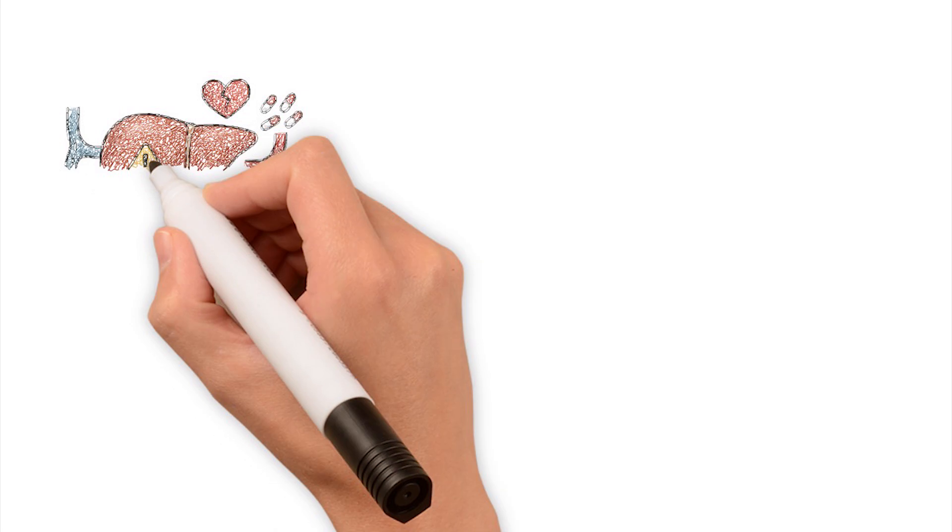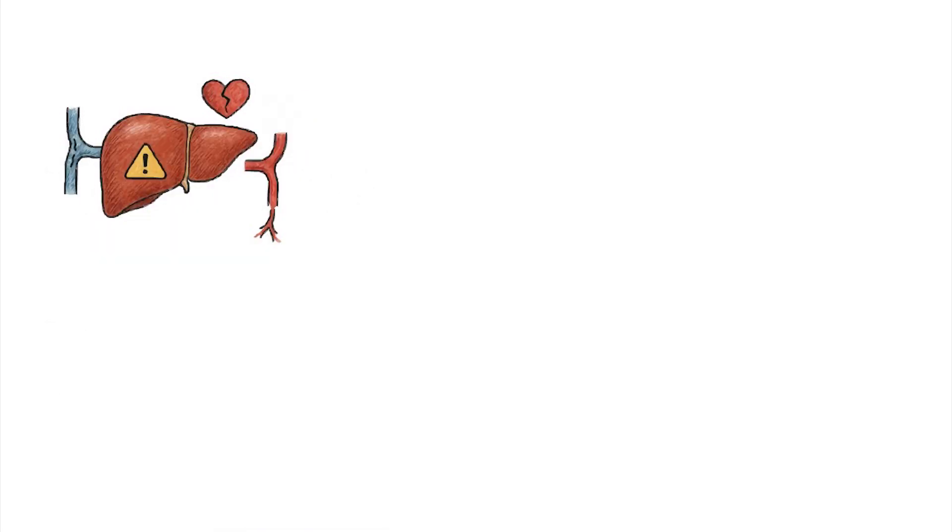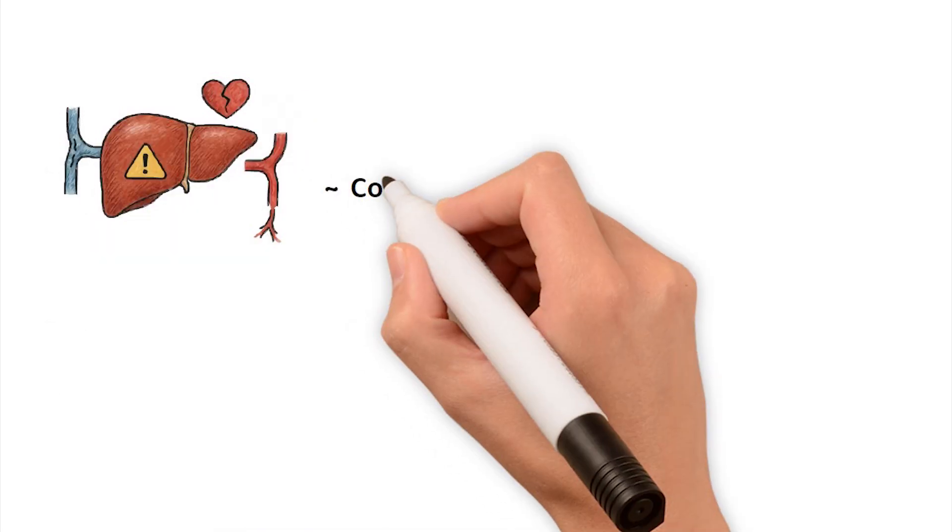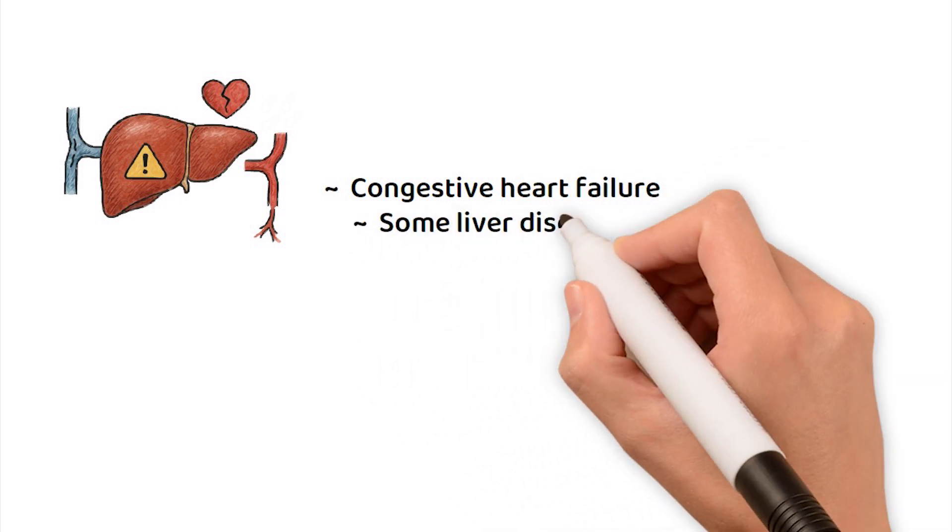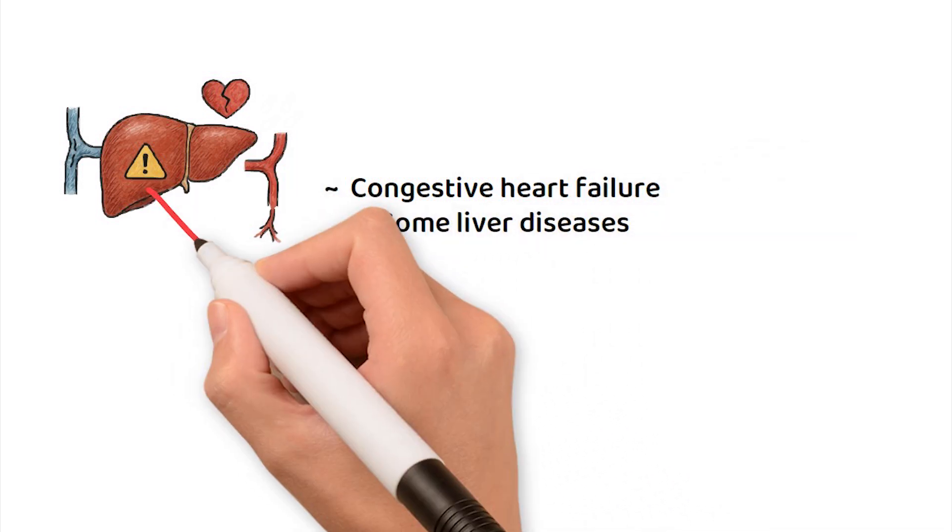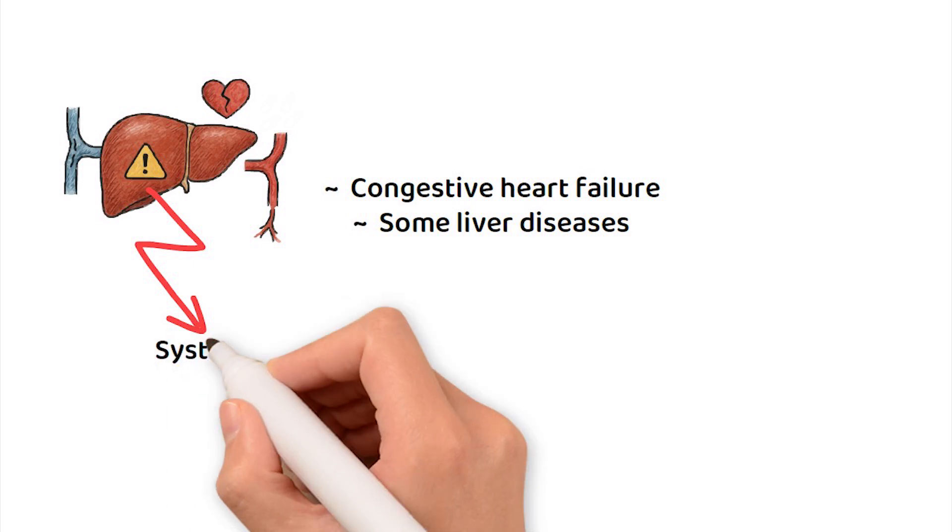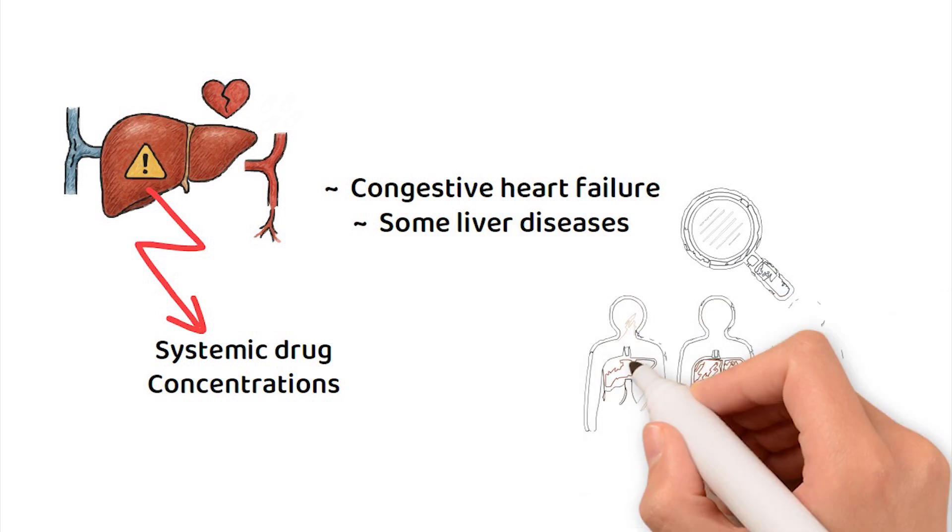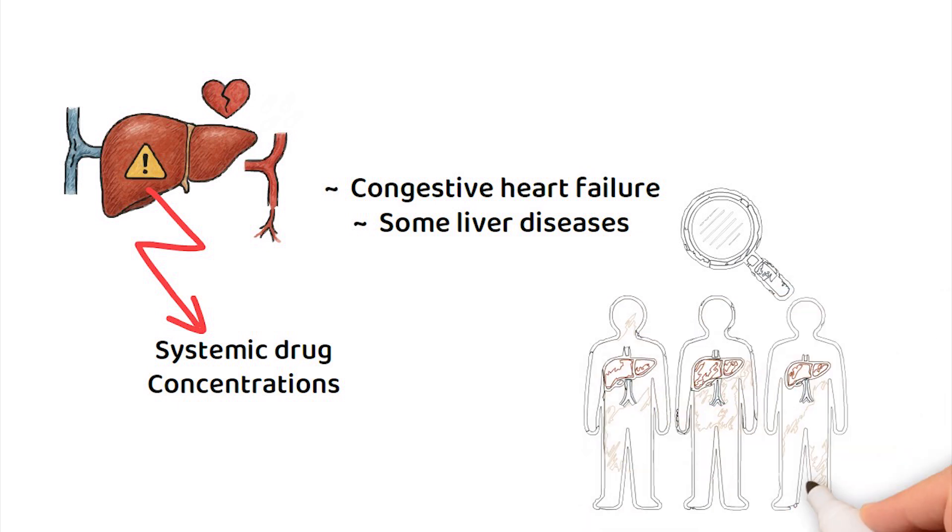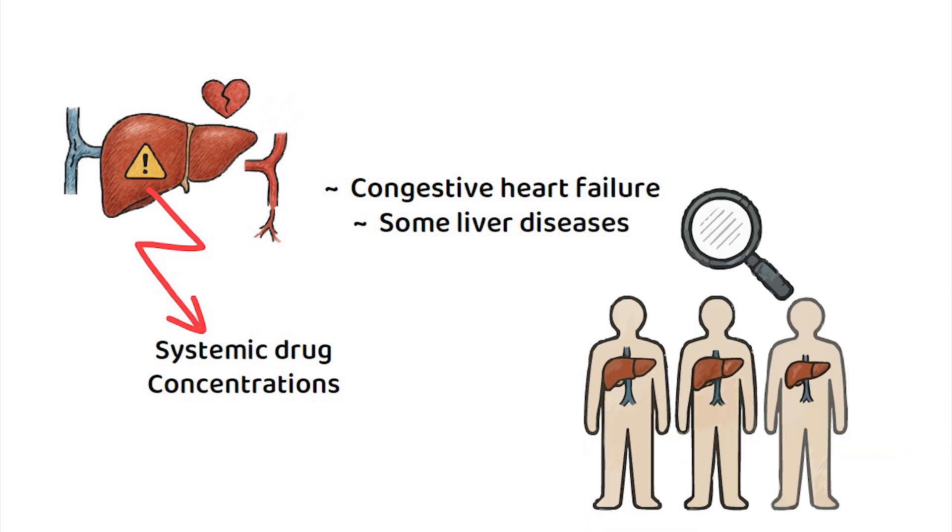Additionally, because hepatic clearance in these drugs is flow-limited, any reduction in liver blood flow, such as in cases of congestive heart failure or some liver diseases, can markedly increase systemic drug concentrations. This makes inter-individual variability in hepatic blood flow a critical factor to consider, as it can significantly affect drug exposure and therapeutic outcomes.